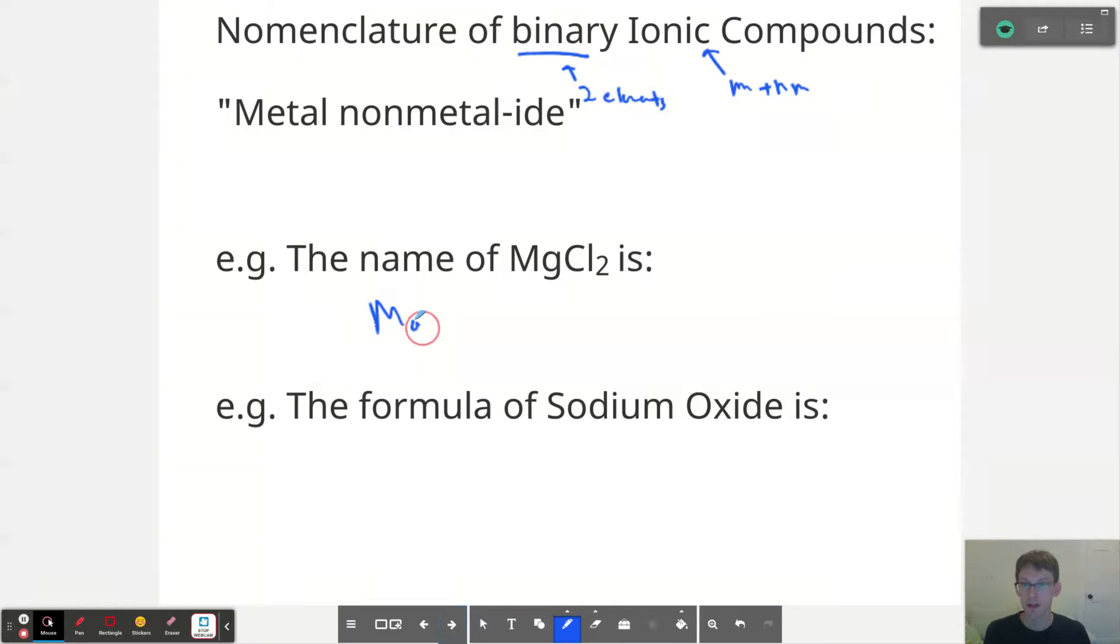So if we have MgCl2, that is just magnesium, the name of the metal. And then instead of saying chlorine, we say chloride.